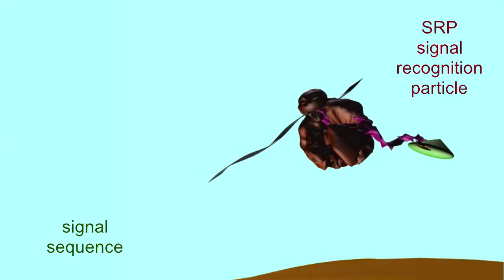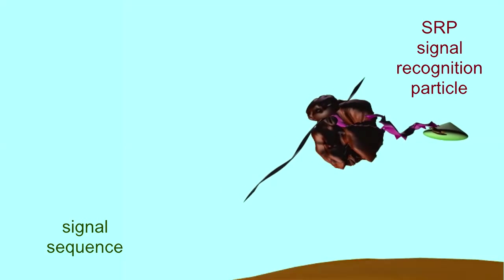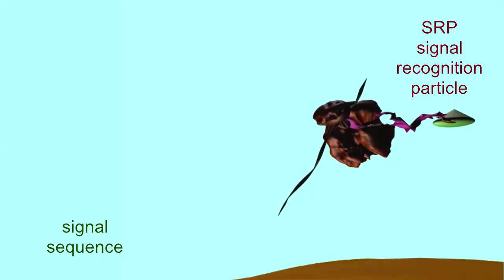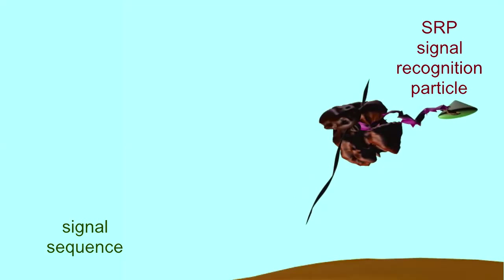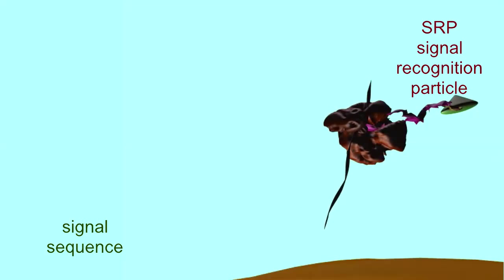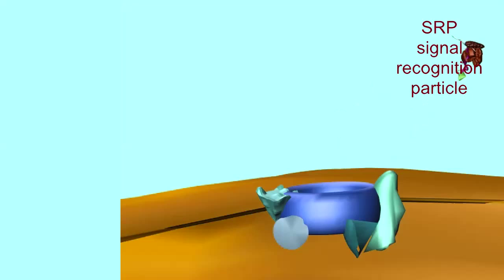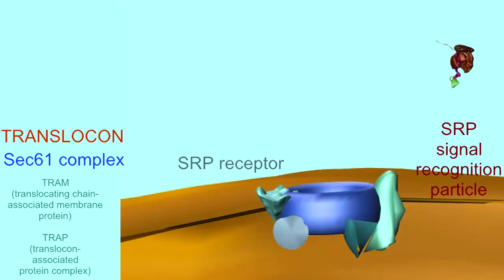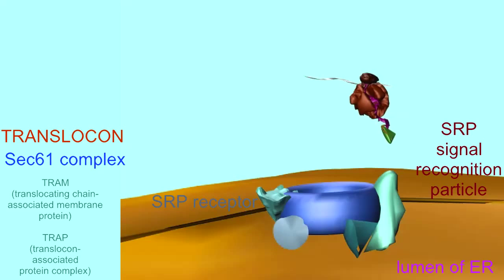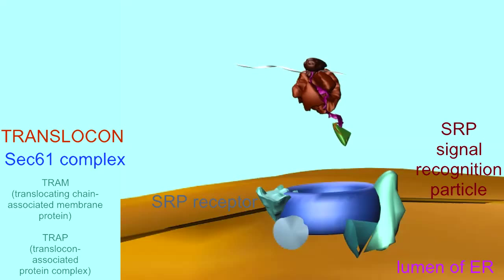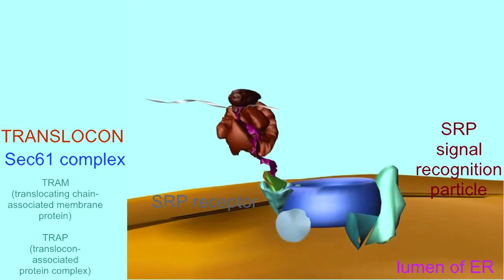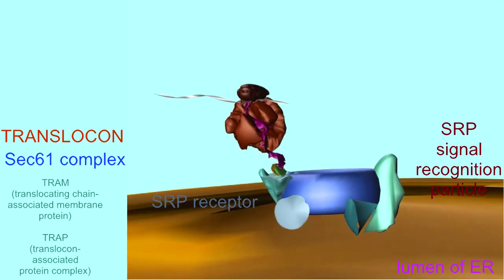Translation will not continue until the peptide has entered the lumen of the ER so that translation and the translocation of the protein occur together. The SRP particle guides the ribosome, growing peptide, and mRNA to the SRP receptor on the surface of the ER membrane. After docking with the SRP receptor,